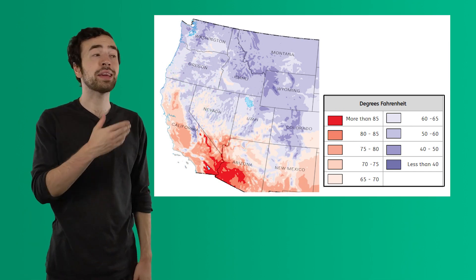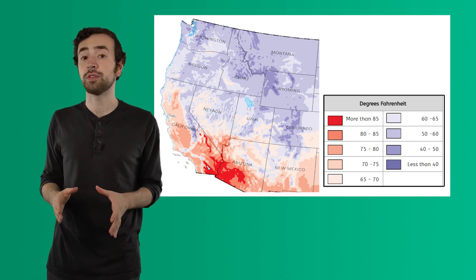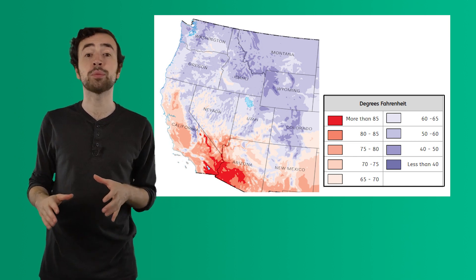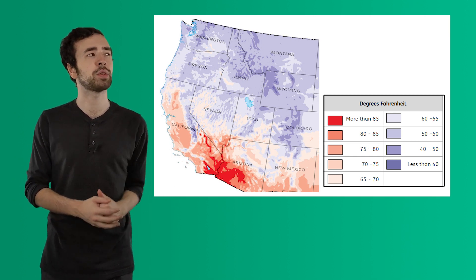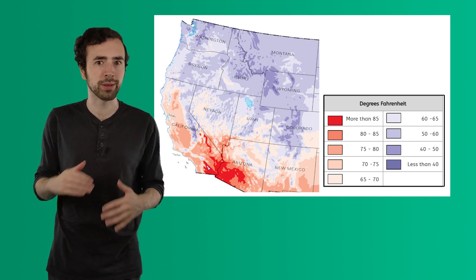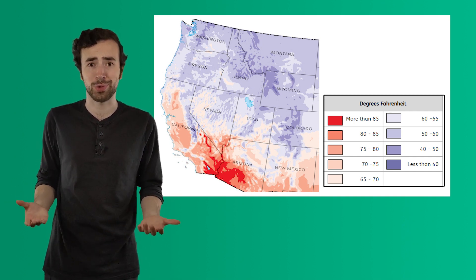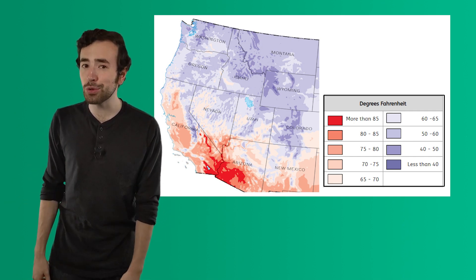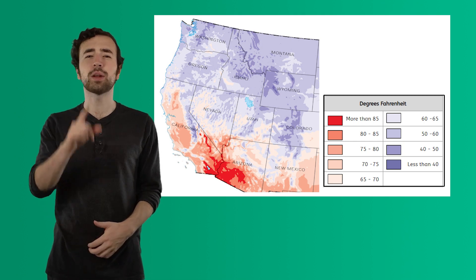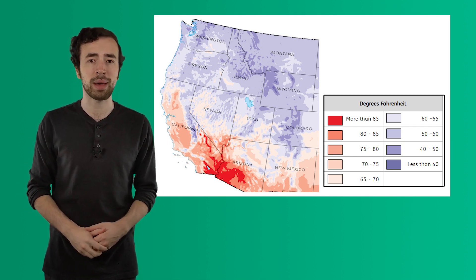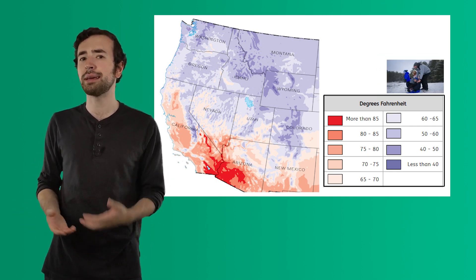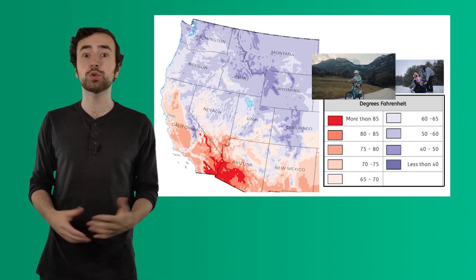Now let's take a look at a climate map. Remember, climate maps show us information about the typical weather of an area. I can see from this map that Montana experiences average temperatures that range from between 40 degrees Fahrenheit and 60 degrees Fahrenheit. Temperatures colder than 40 degrees are really cold, and temperatures warmer than 60 degrees are pretty warm. I can draw the conclusion that Montana must experience seasons of colder weather and warmer weather. Based on what I already know and the information from the climate map, I can make inferences that people in Montana can do both cold weather activities like sledding and ice skating, and warm weather activities like swimming and riding bikes.